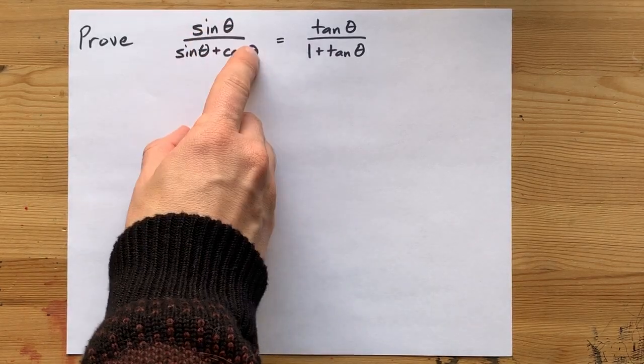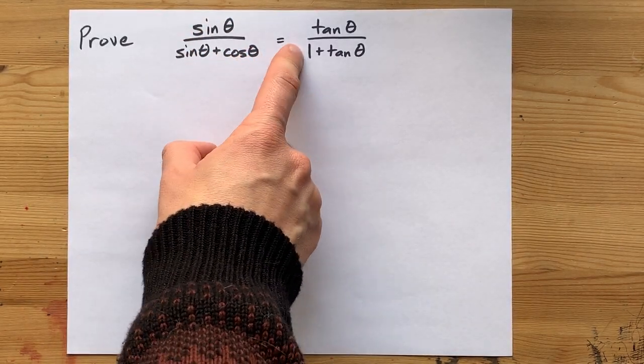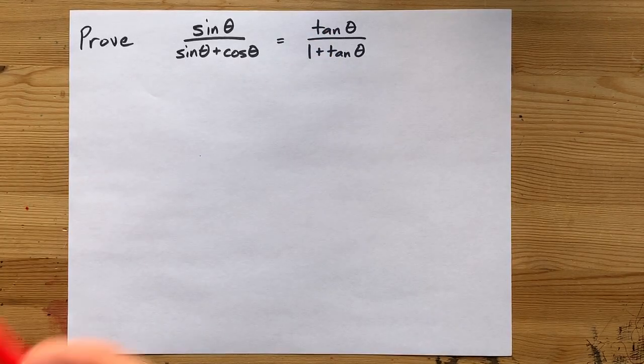Can we prove that sine over sine plus cos is the same as tan over 1 plus tan?